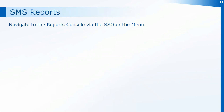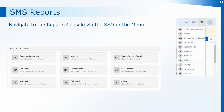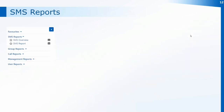There are also reports available for SMS messages that have been sent out. Navigate to the reports console either via the single sign-on page or via the menu by clicking on the three lines next to your initials and selecting Reports. Once in the reports console, on the left-hand side you'll see a section marked as SMS Reports. If it's not expanded, click on the little arrow next to it and it will show the reports available.